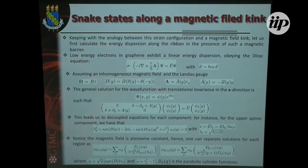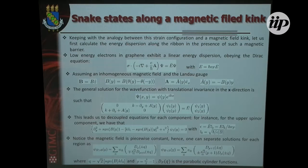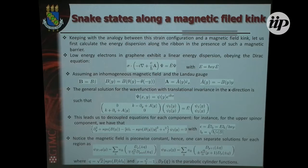Our way to map the strain effects is to consider that electrons behave as if in an unstressed flake but under the presence of a magnetic field. In the next slide, I show how the energy spectrum looks for K and K prime under this assumption. In the low-energy regime, we solve the Dirac equation assuming a Landau gauge. Since we have translational symmetry along the x direction, kx is a good quantum number, so we assume this form for the wave function, and with straightforward calculations you can decouple the equations for each component. The solutions are parabolic cylindrical functions.